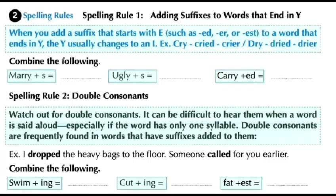In the first verb 'dropped,' the double consonant is -pp-. In the second verb 'called,' it is -ll-. Now combine the following: 'swim' + -ing. When we add -ing to a verb that ends in a consonant preceded by one vowel, we double the last letter. So 'swim' becomes 'swimming' — we double the M.